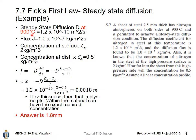Therefore, we don't need to calculate the diffusivity D at 900 degrees Celsius. And the diffusion flux J is also given to be 1 times 10 to the power -7.